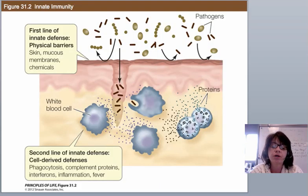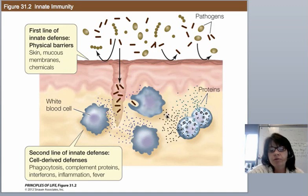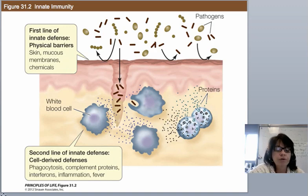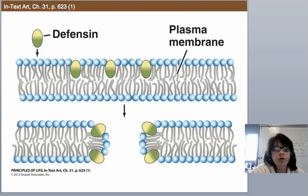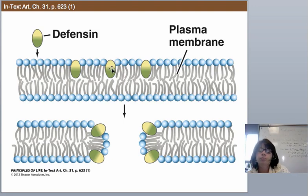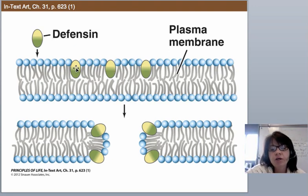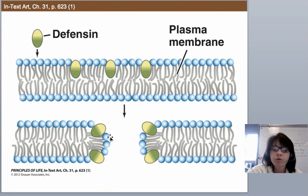There are about four and a half minutes left to cover nonspecific immune systems. We have our skin as the first line of defense — a protective barrier. If something gets inside, we rely on our second line of defense: our cell system and specific proteins that get released. There's a protein called defensin that recognizes the membranes of pathogens or bacteria, pokes holes in the membrane, and makes the pathogen explode. This is a recurring theme: the immune system finds a pathogen, marks its membrane, punches holes in it, and has it explode.